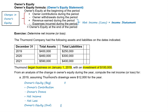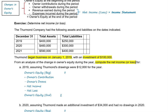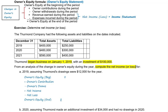From an analysis of the changes in owner's equity during the year, we need to compute the net income or net loss. I've put in the owner's equity formula so we can use it to calculate net income or net loss. Rather than listing revenue and expenses separately, I've combined them as net income or net loss. The formula is: owner's equity at the beginning of the period, plus owner's contributions, minus draws, plus net income or minus net loss, equals owner's equity at the end of the period.